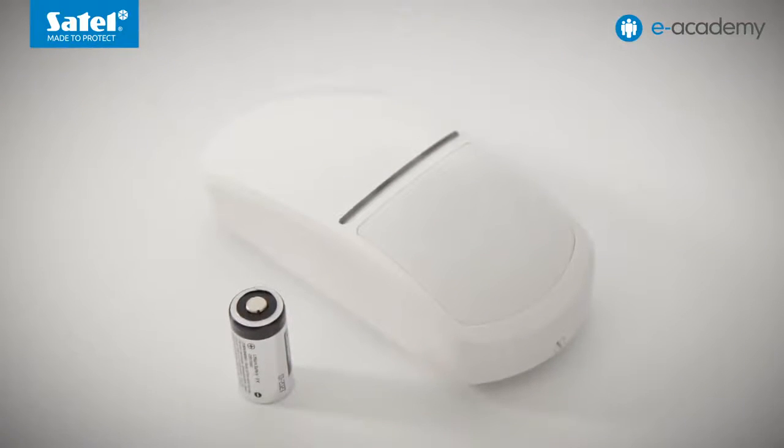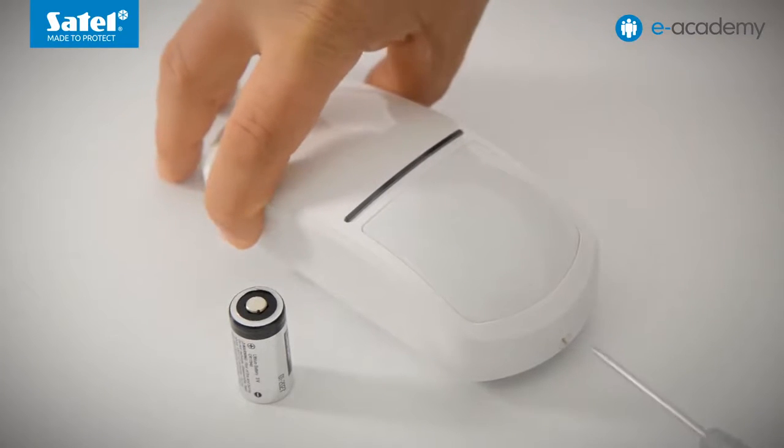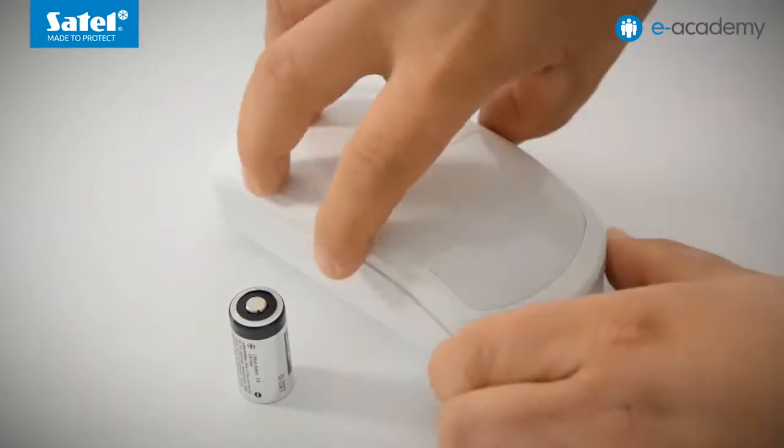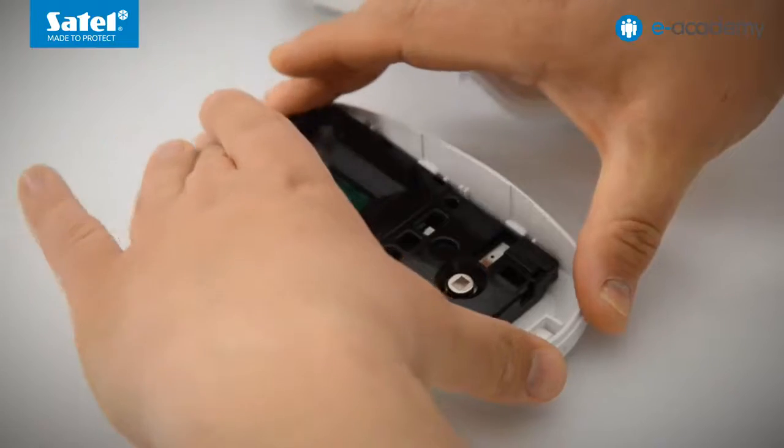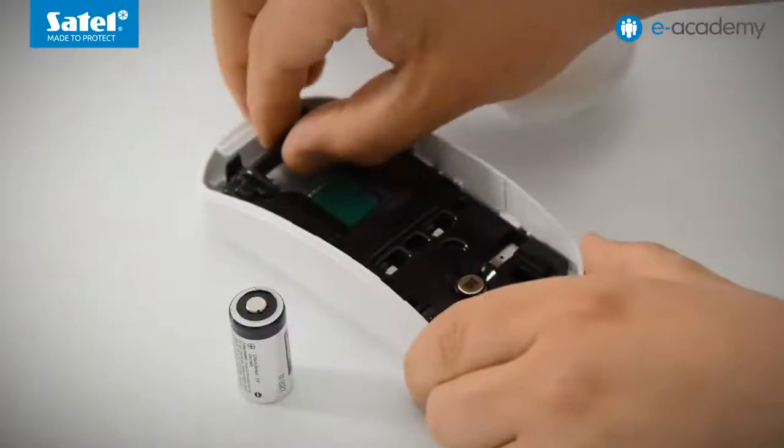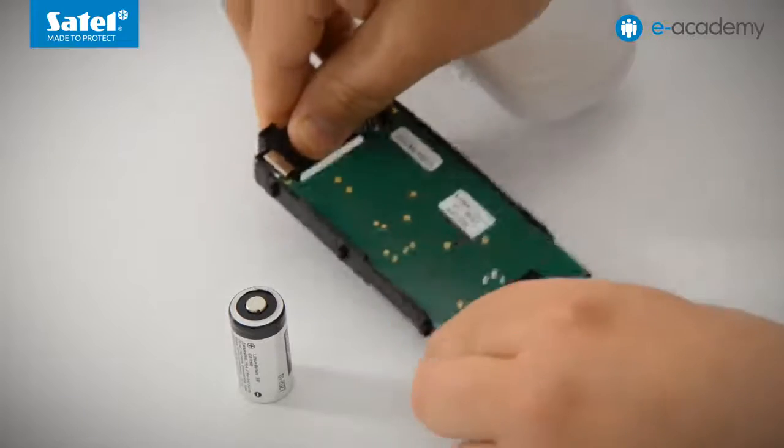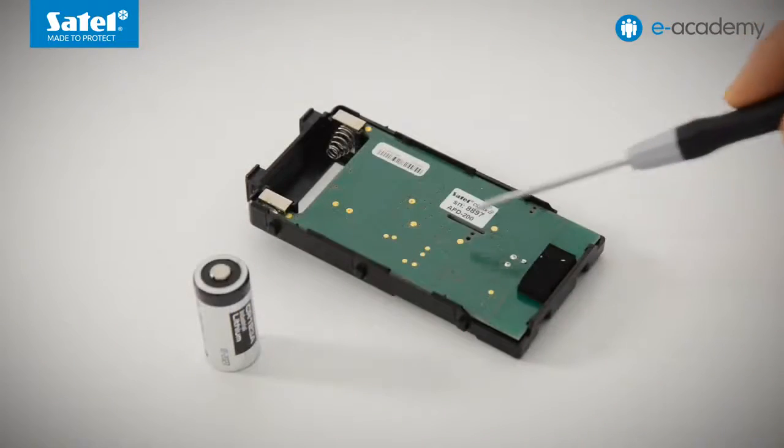As the first one, we will register the APD200 motion detector. To do this, open the detector enclosure by gently turning the lock. Remove the front part of the enclosure. Push down the electronics module to disconnect it, then carefully remove it from the enclosure. At the back of the module, there is a sticker with the detector serial number.